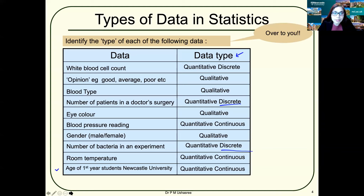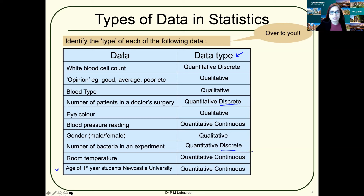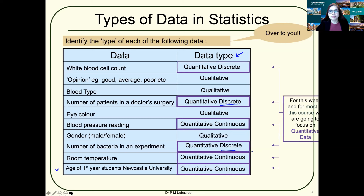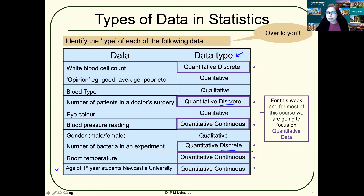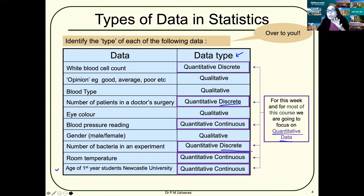So this clearly helps you understand the difference between qualitative and quantitative data, and within quantitative data the two types: discrete and continuous. The first few weeks we'll be concentrating on quantitative data; the last couple of weeks on qualitative data. From now we're going to concentrate more on quantitative data.